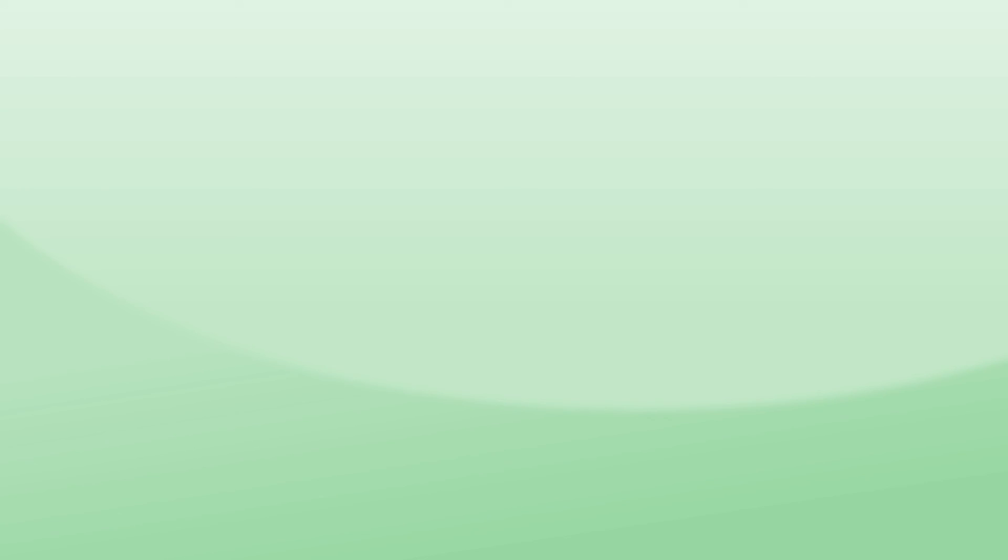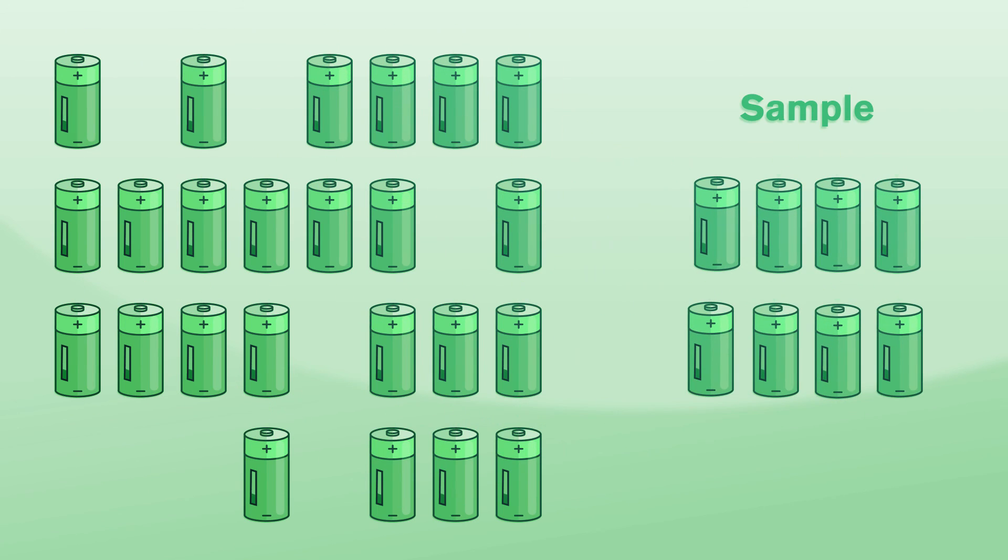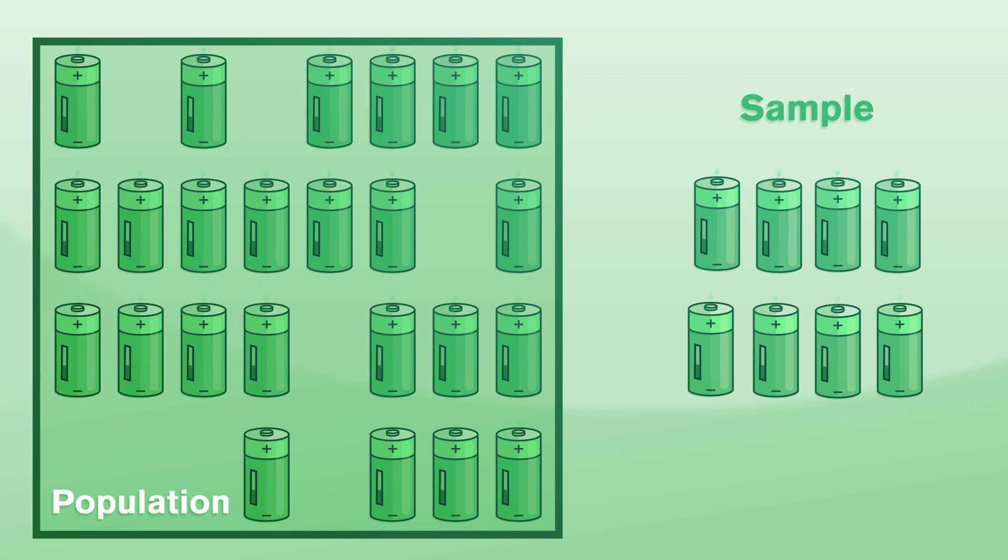Sampling is the process of taking a subset of items from a larger group, which is referred to as a population, in order to infer about said population. There are many aspects of sampling that need to be considered, but that will have to be left to another day. Thank you.